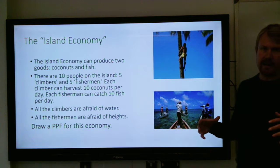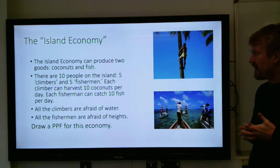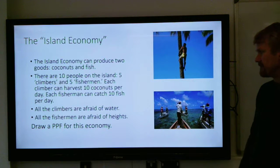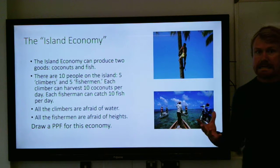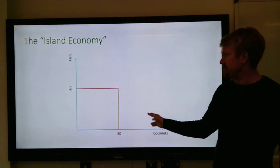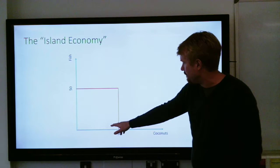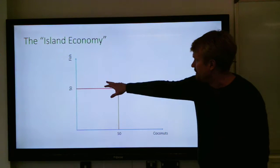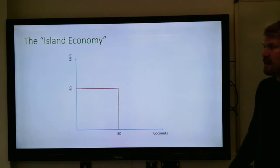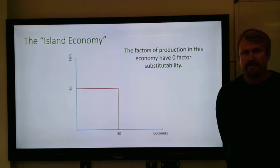One example we would have done in class is the island economy, which has two goods: coconuts and fish. If there are ten people on the island — five climbers and five fishermen — each climber can harvest ten coconuts per day and each fisherman can catch ten fish per day. All the climbers are afraid of water and all the fishermen are afraid of heights. This is completely imperfect factor substitutability, so the PPF is a very concave curve — if you tried to move fishermen to harvesting coconuts they wouldn't do it because they're afraid of heights.